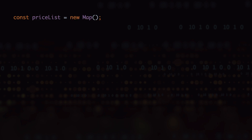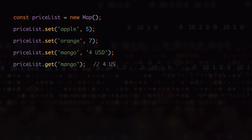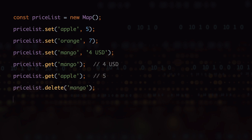To set values we can use the set method. For example, here we are setting the value for the apple key to be 5 and the value for the orange key to be 7. For the values we can have booleans, objects, strings, or any other data type. For example, here we are setting the value for the mango key to be '4usd', which is a string. To get values out of the map we simply use the get method — here we are getting the values stored for mango and apple. To delete items from the hash table we use the delete method with the key name — here I am deleting the mango and apple keys.